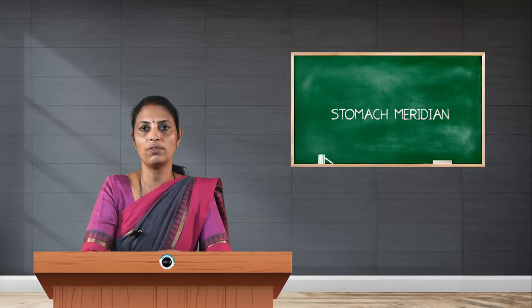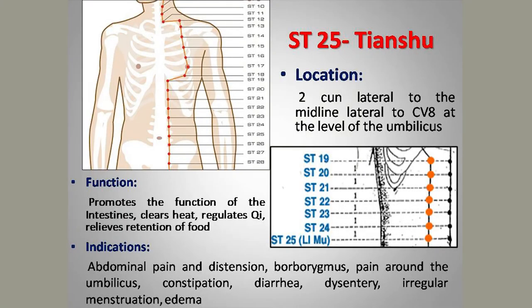Stomach 25, Tianshu, is a very important mu-front point. Its location is 2 cun lateral to the center of the umbilicus, which is CV8. It helps in moving wind, clearing heat, regulating the flow of qi, and is effective in treating constipation.